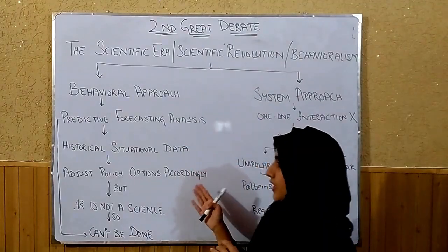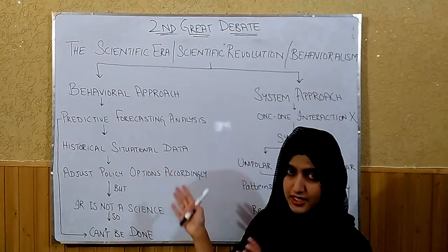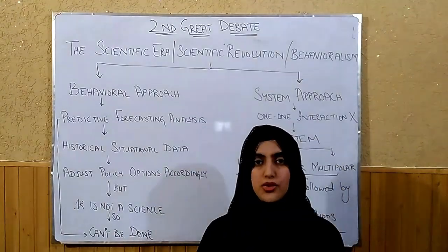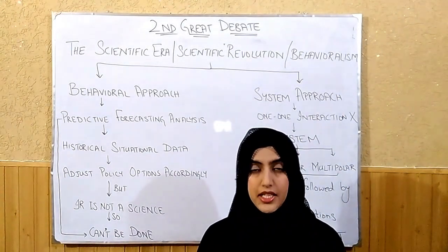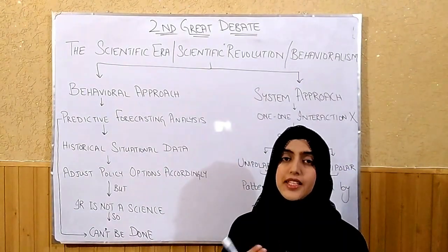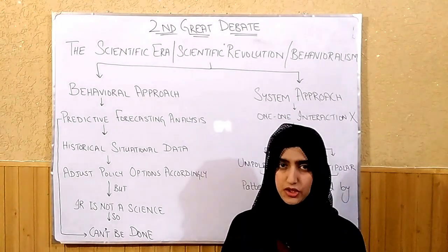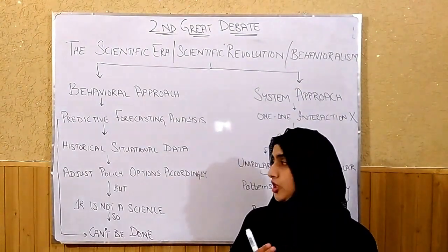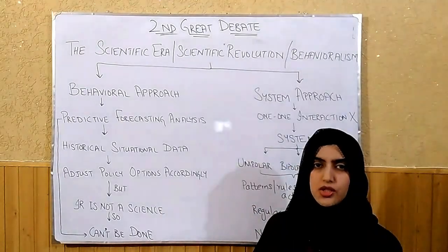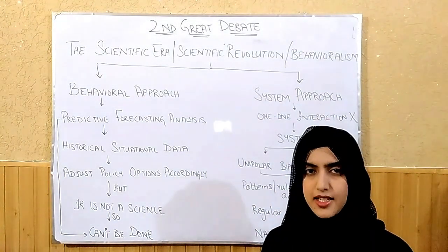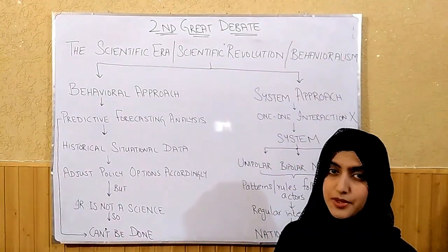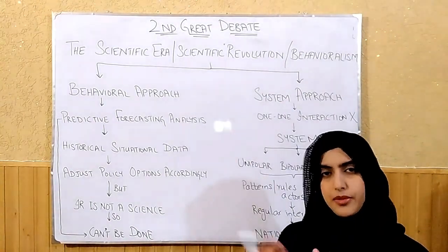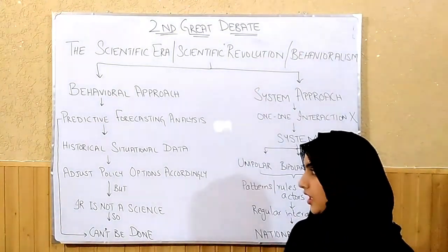Once you have predicted the future, you will adjust the policy options accordingly. When you have predicted what will be the United States of America's stance towards Iran, then you will adjust your policies first. If you have analyzed and predicted what will happen in the future, you accordingly make your policies first.